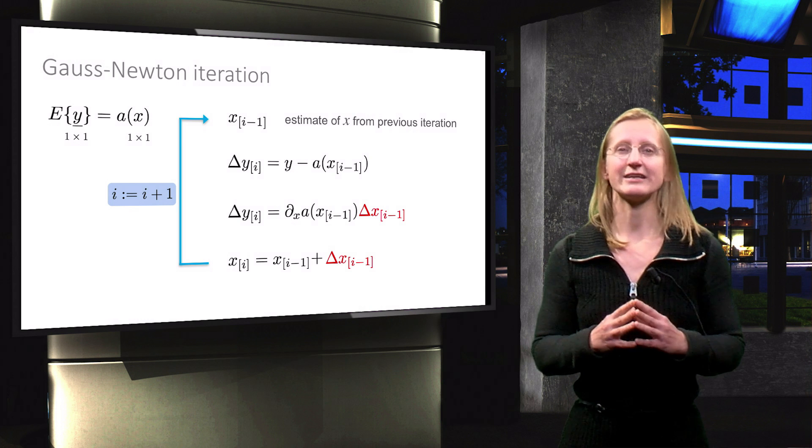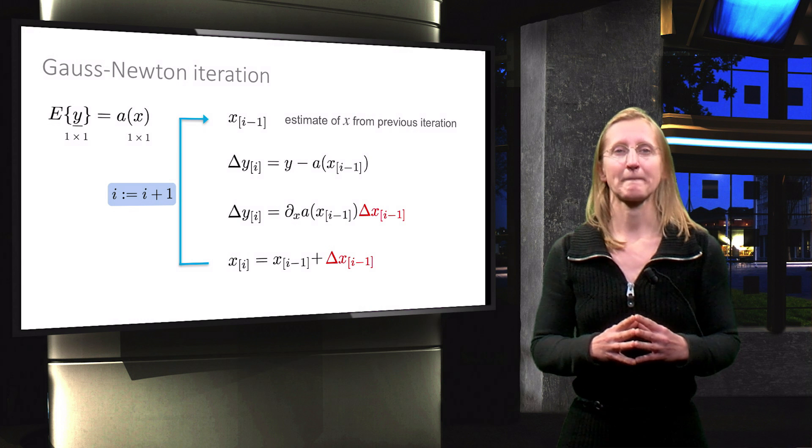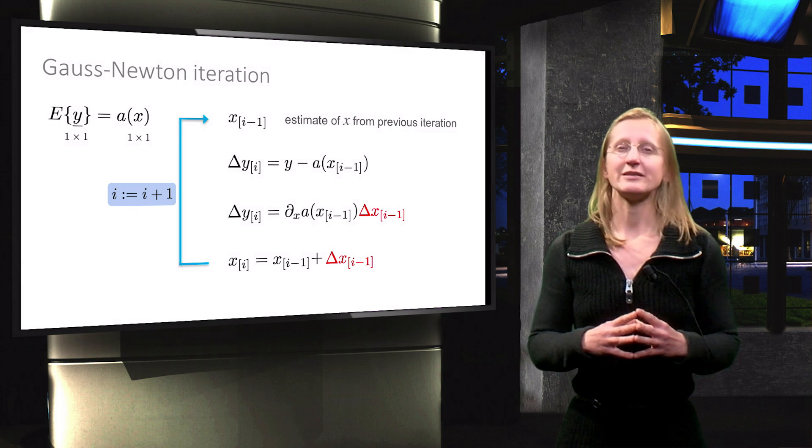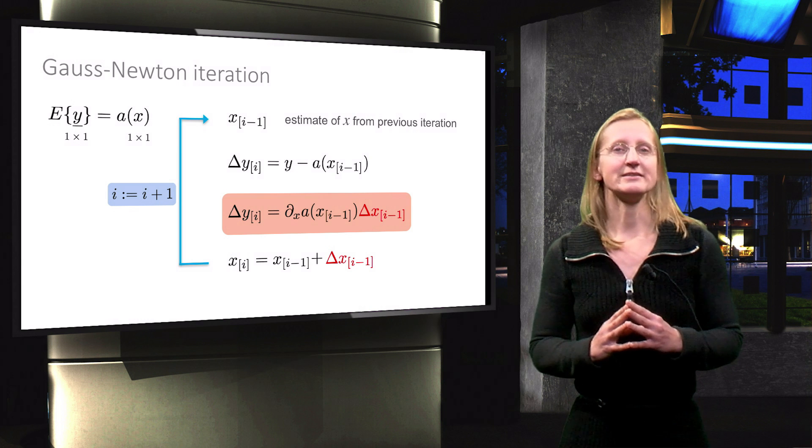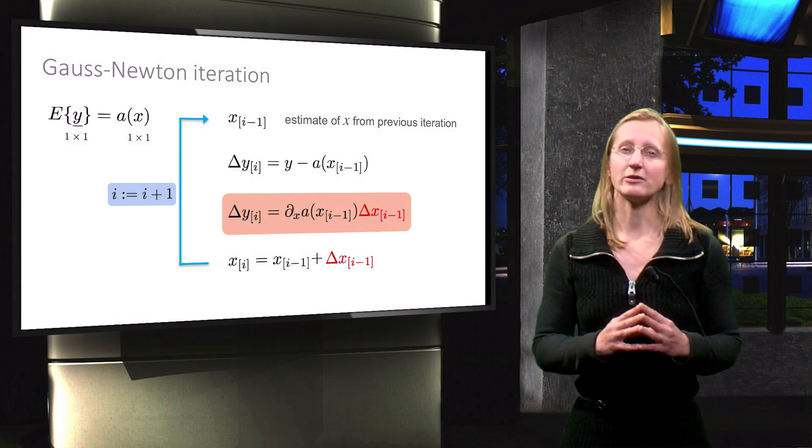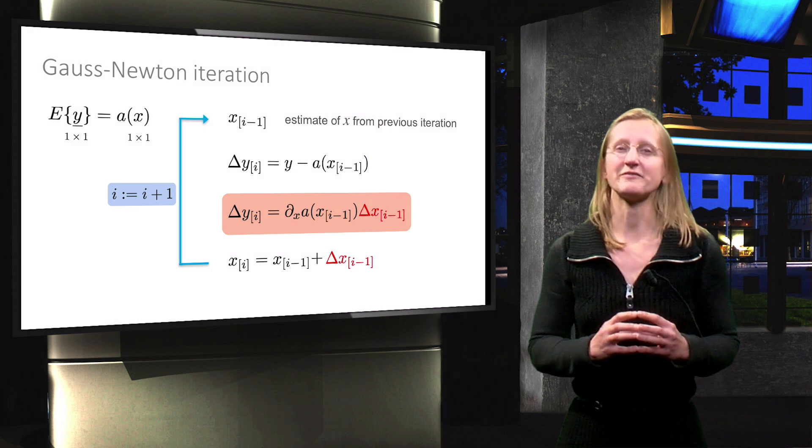This iteration procedure is known as the Gauss-Newton iteration. Now let's zoom in on the equation highlighted here. In the scalar case it is straightforward to calculate delta x, but what if x is a vector?